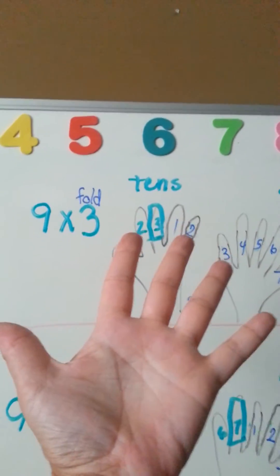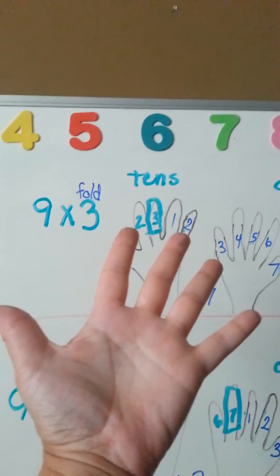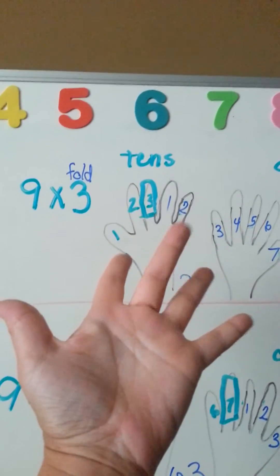For 9x3, what we're going to do is, we're going to put down the third finger. 1, 2, 3.